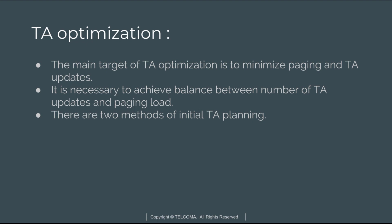The main target of tracking area optimization is to minimize paging and tracking area updates. Tracking areas are normally planned relatively large—around 100 eNodeBs—so it is necessary to achieve a balance between the number of tracking area updates and paging load. Paging load increases with the size of the tracking area. There are two initial planning methods: small tracking areas result in more frequent updates, lower paging load, but higher UE battery consumption; larger tracking areas result in less frequent updates but higher paging load, which can cause paging to be blocked and lead to traffic loss.